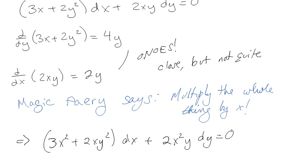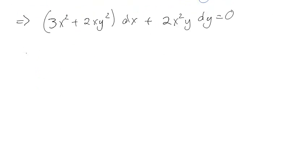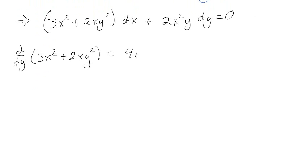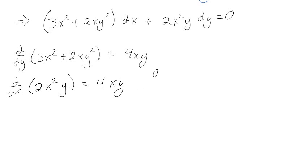After multiplying by x, we end up with (3x² + 2xy²)dx + 2x²y dy = 0. If I take ∂/∂y of the first term I'm going to get 4xy, and if I take ∂/∂x of the second term I'm going to get 4xy. They're the same, so now I can use exact equations on it.